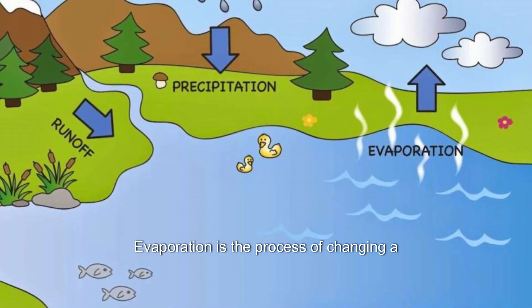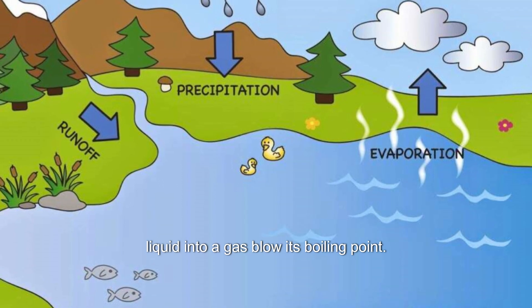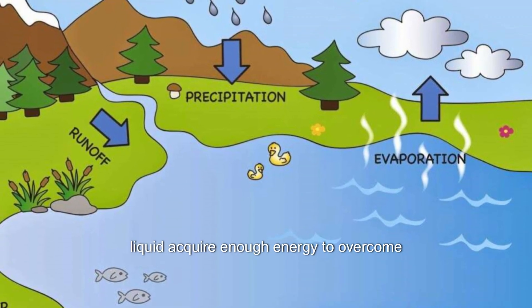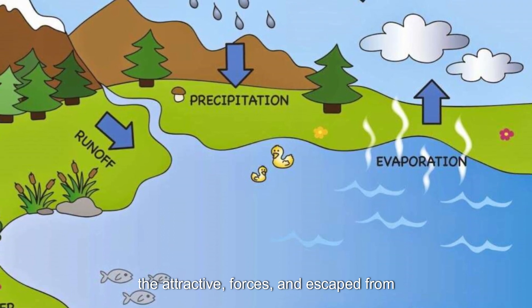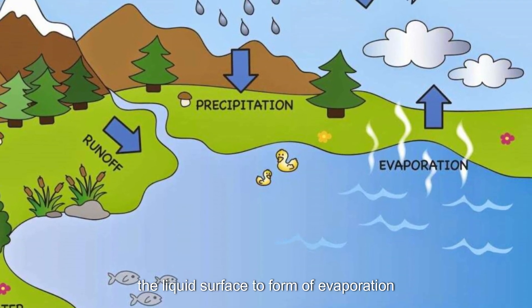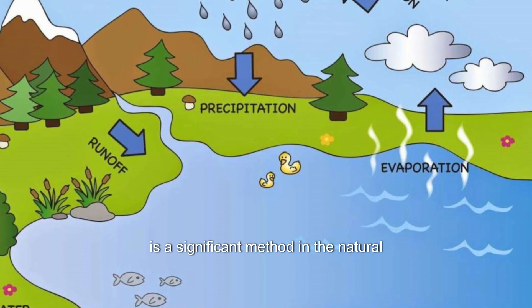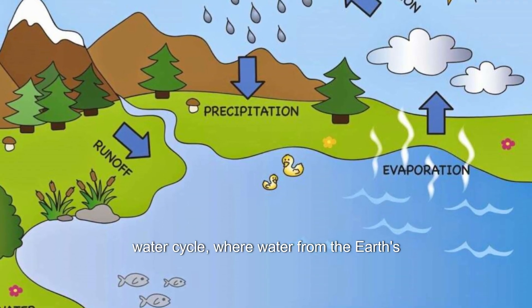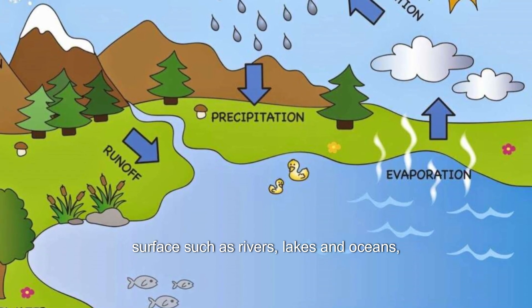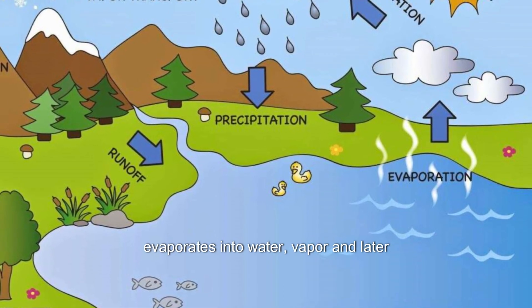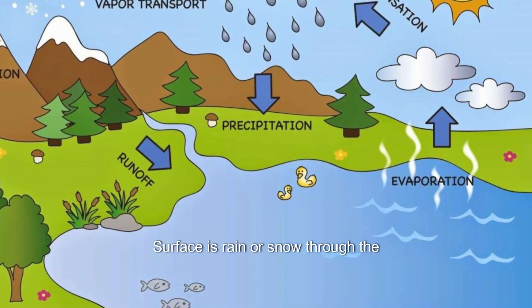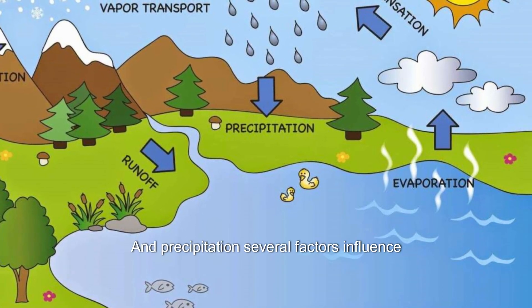Evaporation is the process of changing a liquid into a gas below its boiling point. This process occurs when the particles of a liquid acquire enough energy to overcome the attractive forces and escape from the liquid's surface to form a gas. Evaporation is a significant method in the natural water cycle, where water from the Earth's surface, such as rivers, lakes, and oceans, evaporates into water vapor and later forms clouds that can then come back to the Earth's surface as rain or snow through the processes of condensation and precipitation.